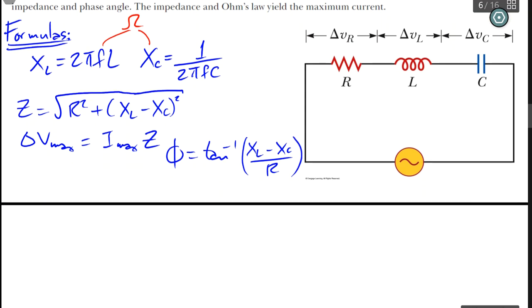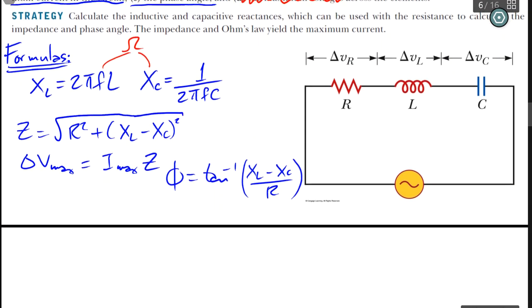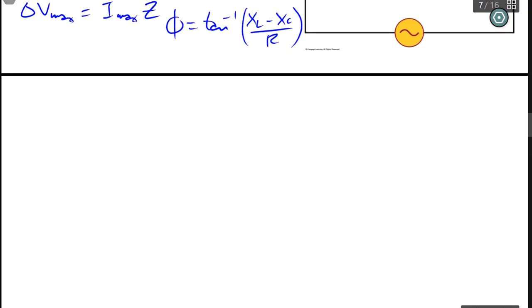There we go. They are good to go. I'll go back to these formulas later, as I go ahead and get into it. Now, in order to find the impedance, we need to find out what XL and XC are first.